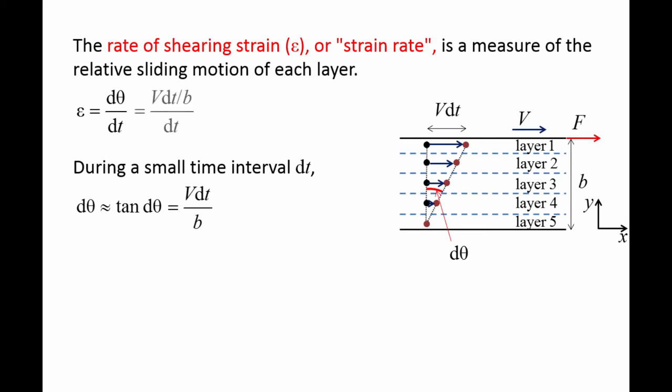Plugging in d theta into the equation for the rate of shearing strain, we get v times dt divided by h divided by dt. Eliminating dt in the numerator and denominator gives us v divided by h.